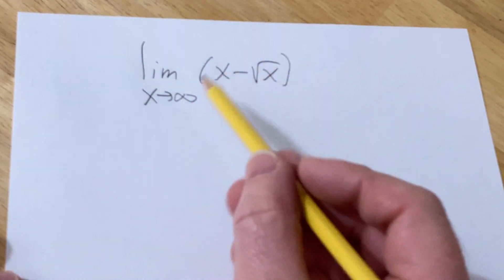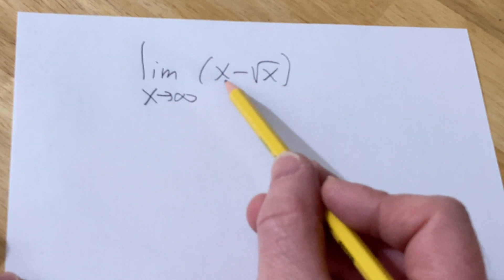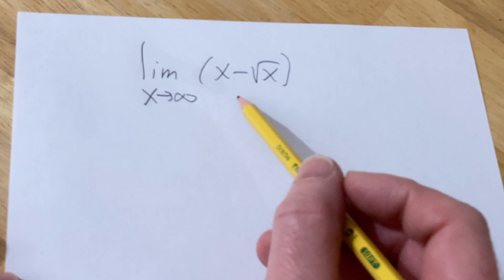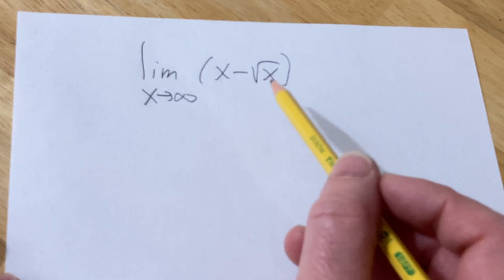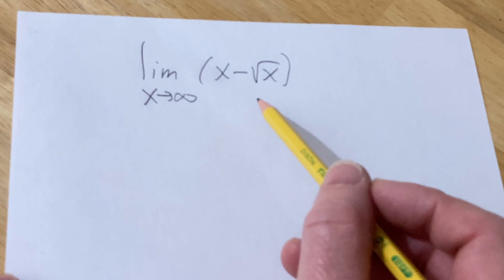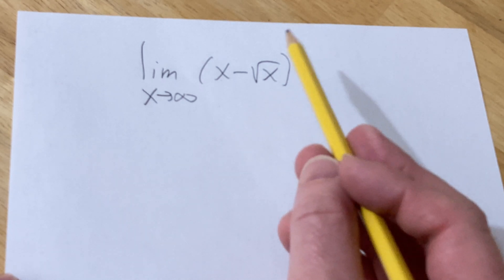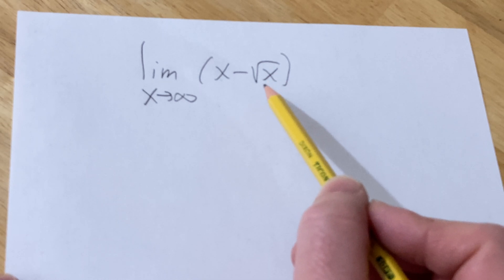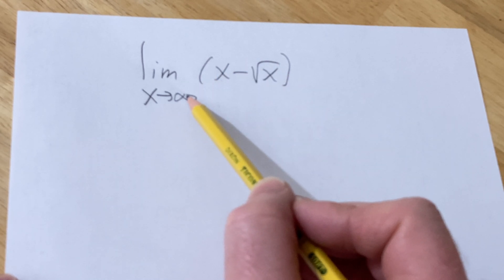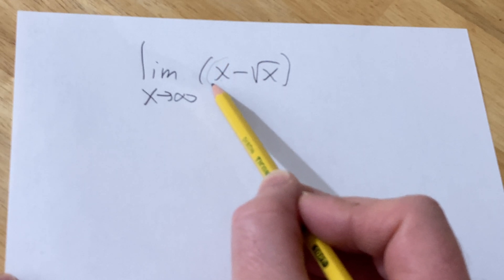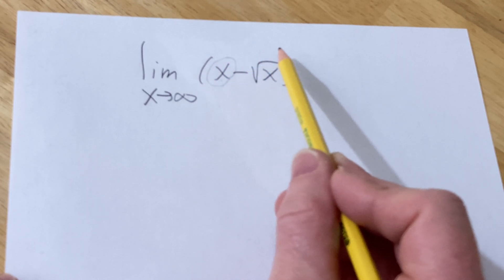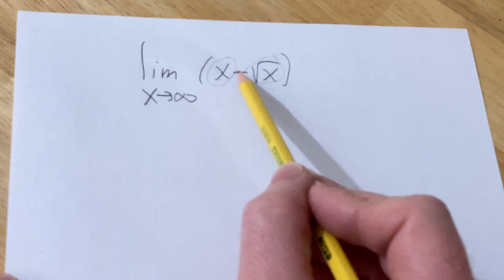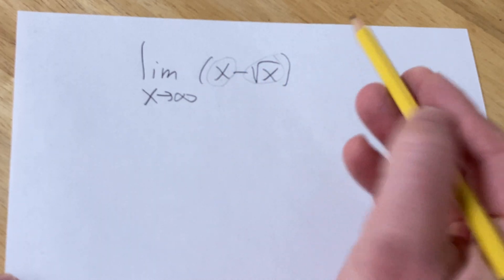Hi, in this video we're going to find the limit as x approaches infinity of x minus the square root of x. So there's a couple ways to do this. One, you can just use intuition. If you think about it, x grows much faster than the square root of x. And so when x approaches infinity, this is getting much bigger than this.